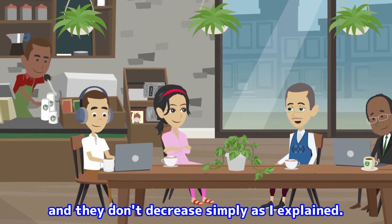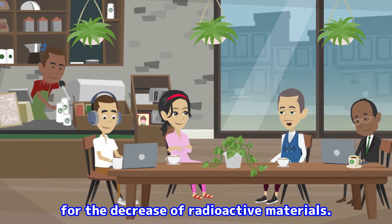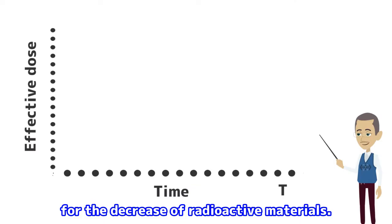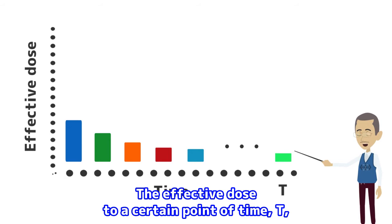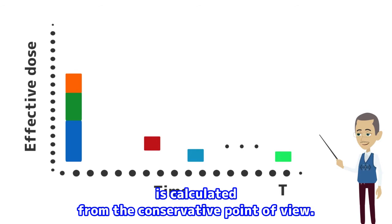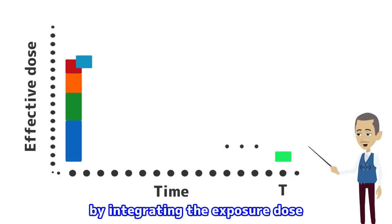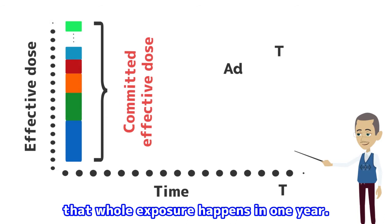Some of the radioactive materials are accumulated in particular parts of the body and they don't decrease simply as explained. It depends on the kinds of radioactive material. If the explanation for the committed effective dose is depicted in a figure, the effective dose to a certain point of time t will gradually decrease. The committed effective dose is calculated from a conservative point of view — specifically, by integrating the exposure dose of an entire life into the point of the year when the radioactive material is internally taken, based on the assumption that the whole exposure happens in one year.